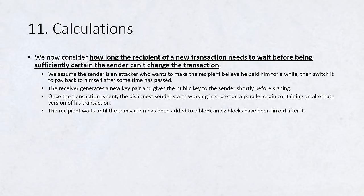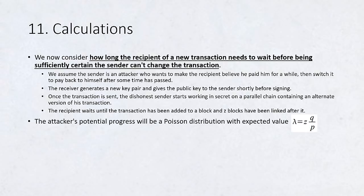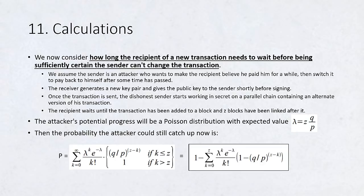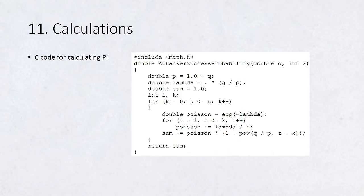The recipient waits until the transaction has been added to a block and Z blocks have been linked after it. He doesn't know the exact amount of progress the attacker has made, but assuming the honest blocks took the average expected time per block, the attacker's potential progress will be a Poisson distribution with expected value lambda equals Z times q over p. To get the probability the attacker could still catch up, we multiply the Poisson density for each amount of progress he could have made by the probability he could catch up from that point. The sum from k equals 0 to infinity of (lambda^k * e^(-lambda)) / k! times (1 - (q/p)^(z-k)). Running some results, we can see the probability drop off exponentially with z.